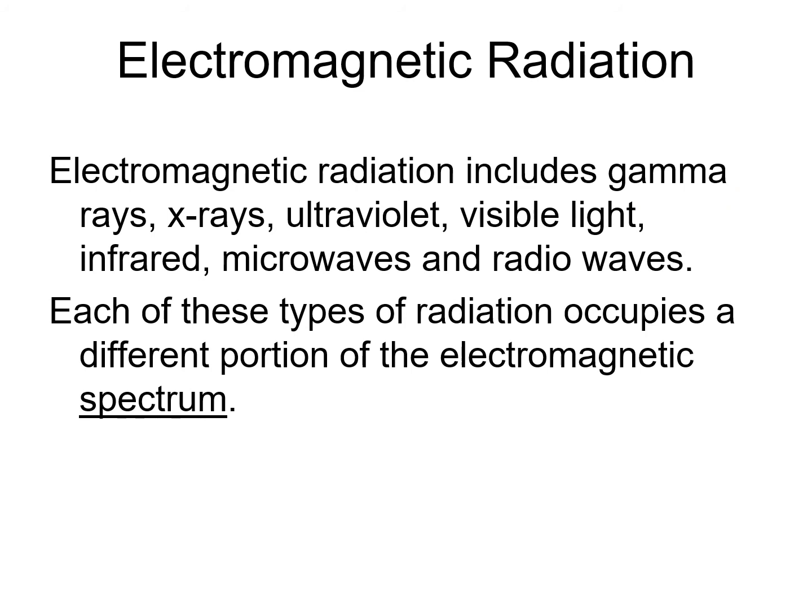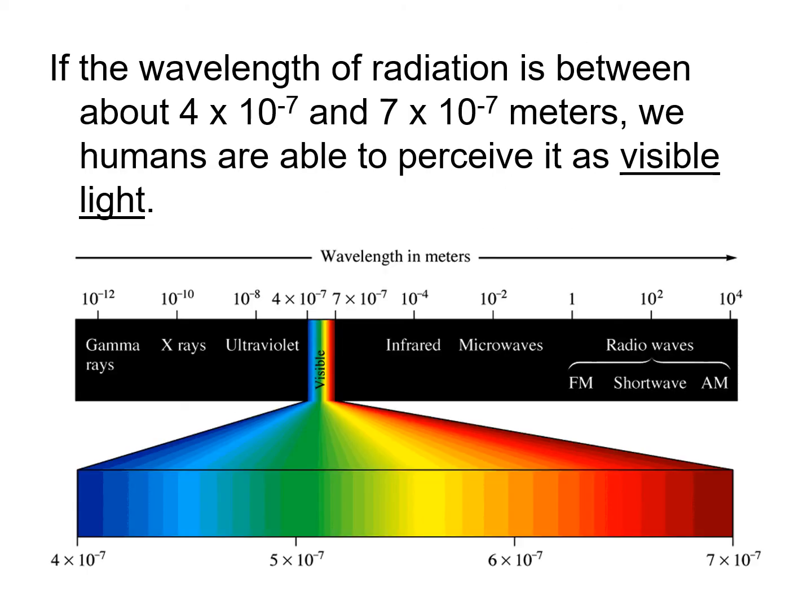Now, electromagnetic radiation includes all sorts of different things that we categorize as electromagnetic radiation, such as gamma rays, x-rays, ultraviolet, visible light, infrared, microwaves, and radio waves, and we call that the electromagnetic spectrum. But what we are concerning ourselves with in this lecture is only with that portion of the spectrum that we call visible light. Visible light has a wavelength of about 400 billionths of a meter to about 700 billionths of a meter. If it is somewhere within that range, a human with normal color vision is able to perceive those wavelengths as visible light. In other words, we have light detectors. We call them eyes.